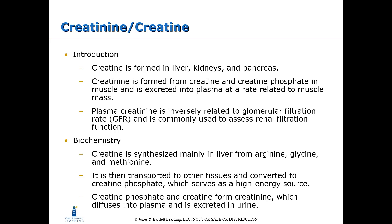Creatine is formed in the liver, kidneys, and pancreas. Creatine can be phosphorylated to become creatine phosphate, which donates its phosphate group to provide short-term energy. Creatinine is formed from creatine and creatine phosphate in muscle and is excreted into the plasma at a rate related to muscle mass. Plasma creatinine is inversely related to glomerular filtration rate and is commonly used to assess renal filtration function. Creatine is synthesized mainly in the liver from arginine, glycine, and methionine, transported to other tissues, and converted to creatine phosphate. Creatine phosphate and creatine together form creatinine, which diffuses into the plasma and is excreted in the urine.